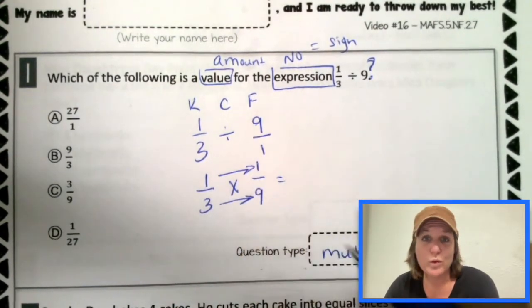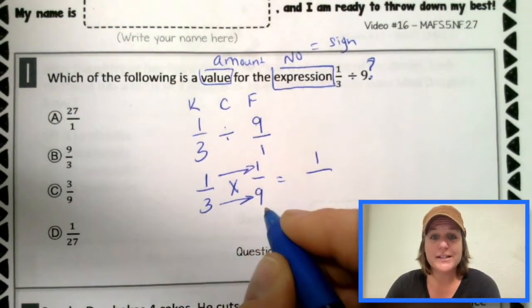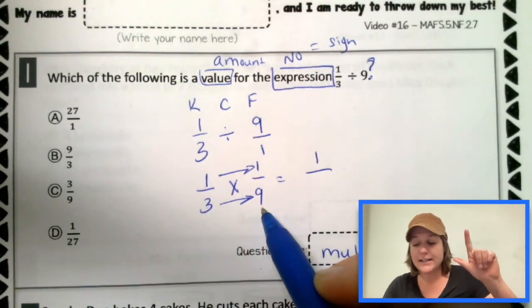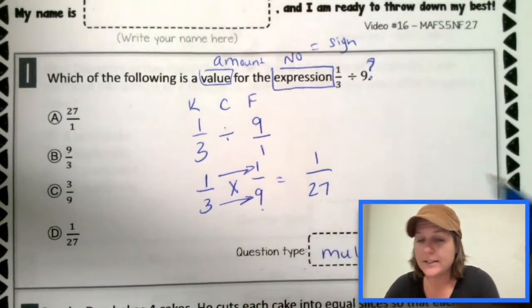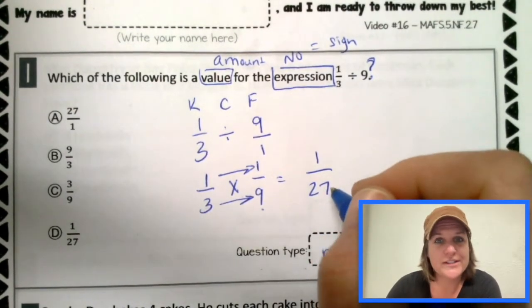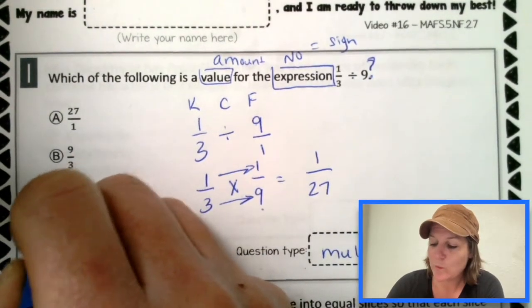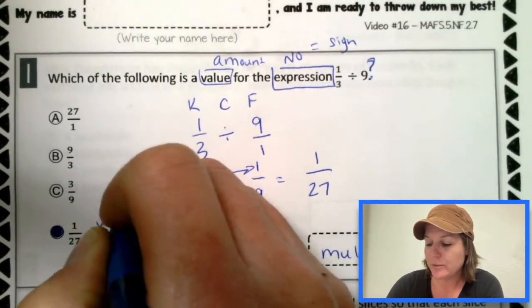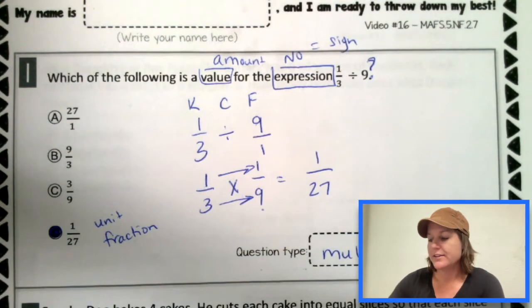So one times one is one. And three times nine is, we got those nines. Nine, 18, 27. That's right. So which answer matches one 27th? D. And also I'm noticing that there's a one in the numerator. That's called a unit fraction when there's one.